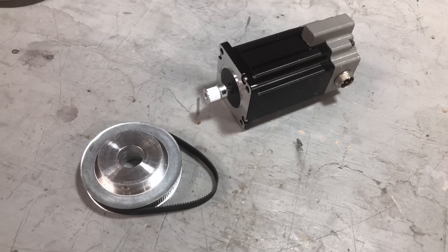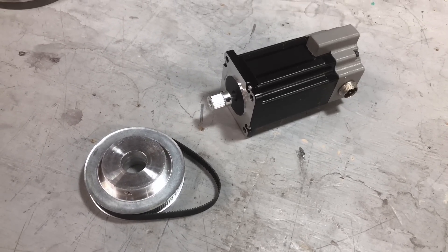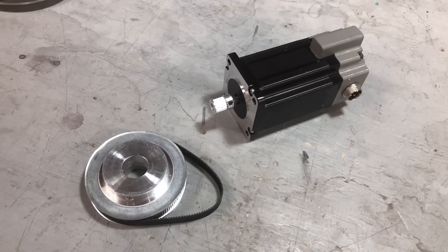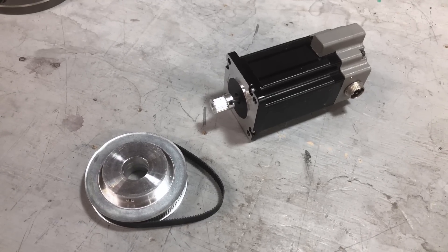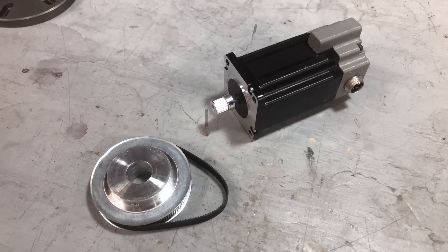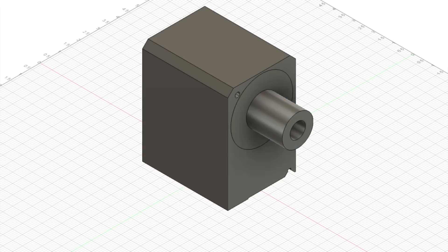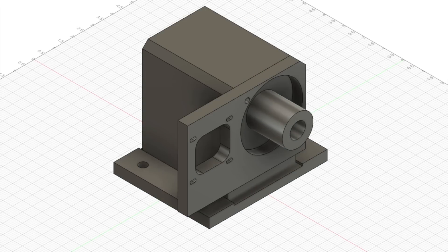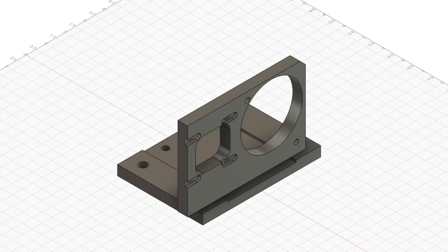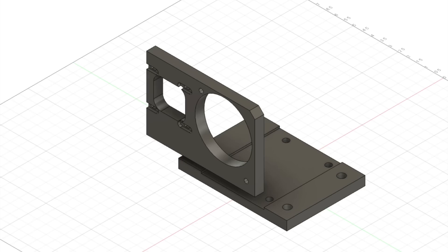I'm using a NEMA 23 stepper motor, as well as a timing belt with the appropriate pulleys for driving this axis. This setup will give me a little bit more versatility for some other ideas I have in the future. We'll have to machine that pulley to fit, as well as machine a couple of these plates I designed in Fusion 360 to mount everything up.